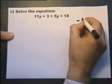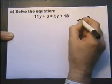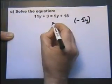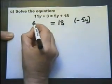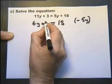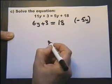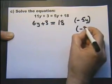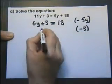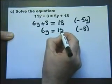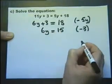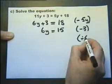And from this side of the equation. Subtracting 5y from both sides of the equation. Now I'm going to subtract 3 from both sides of the equation. Now I'm going to divide both sides by 6.